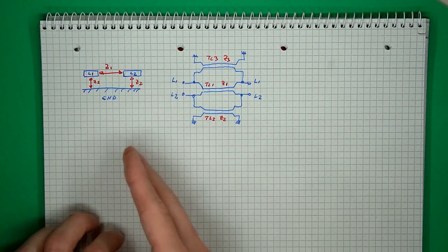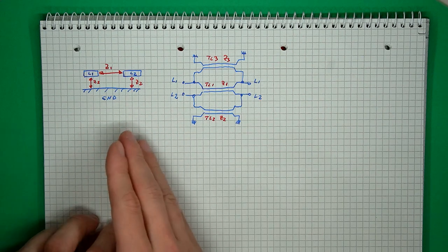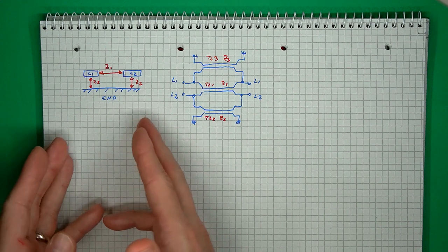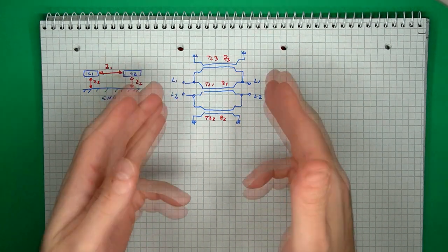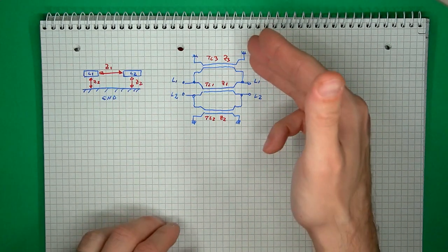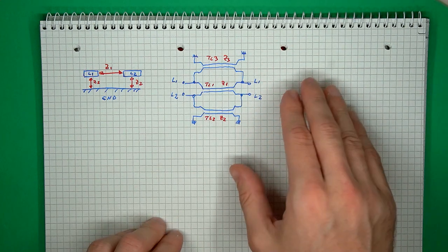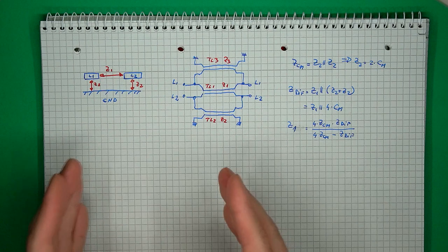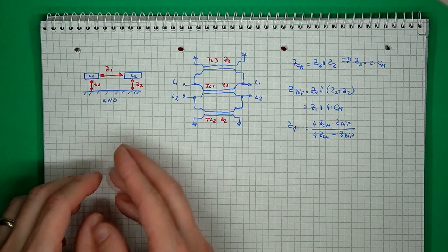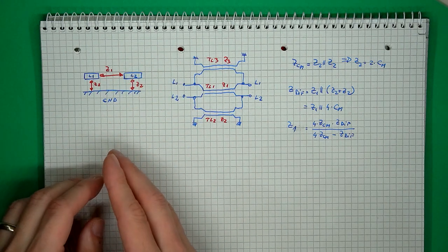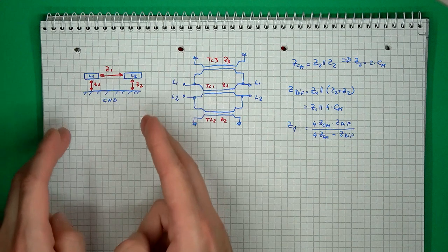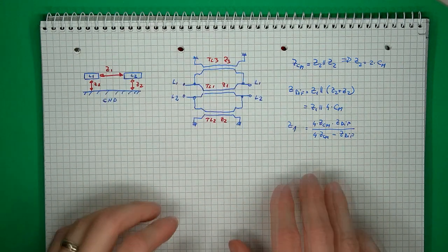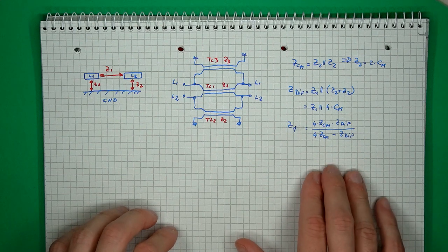For simplicity, we can consider the structure as balanced, so the two impedances to ground are the same. An equivalent simulation model will look like this, with three different transmission lines. If we define the differential impedance as the impedance between the two lines and the common mode impedance as the impedance from both lines to ground, we can link these two parameters to our structure.